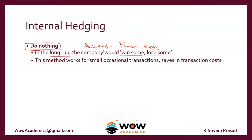'Do nothing' is considered a better option because this method works for small, occasional transactions and it saves on transaction costs. When the gains and losses are going to nullify each other, you would only be wasting transaction costs by entering into a hedge for your forex risk.